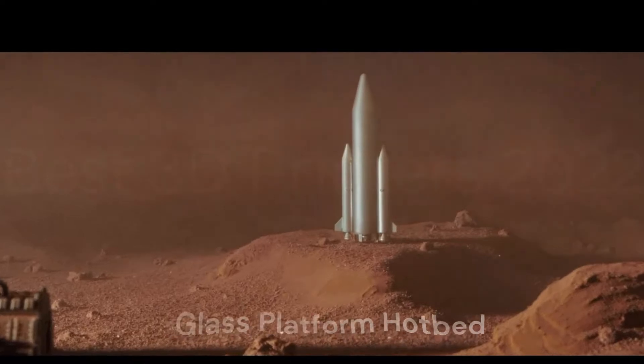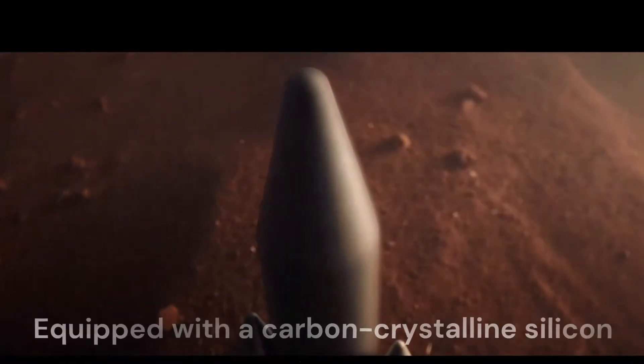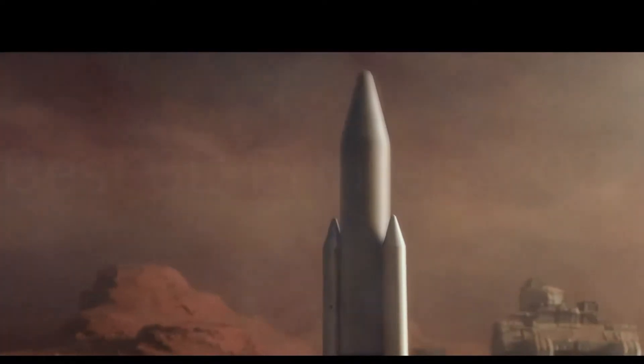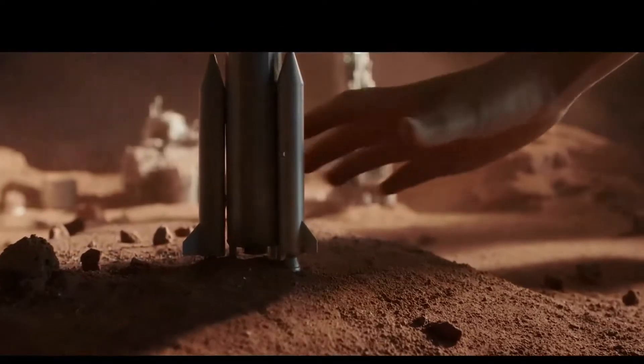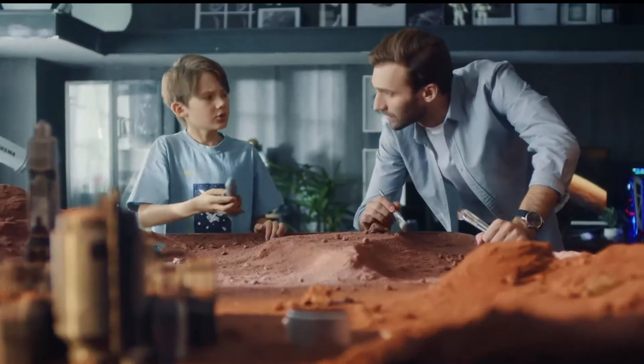Glass platform hotbed, the latest Ender 7 3D printer is equipped with a carbon-crystalline silicon glass print bed. The glass platform allows the hotbed to heat up faster and print better. In addition, the glass bed can withstand higher temperatures.